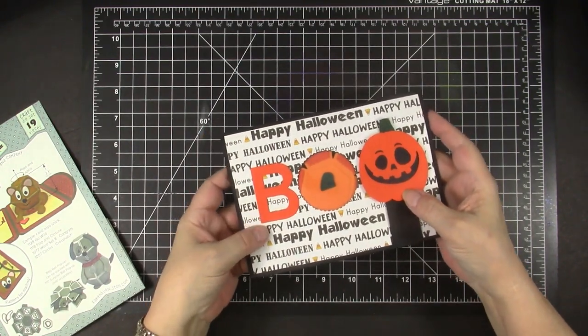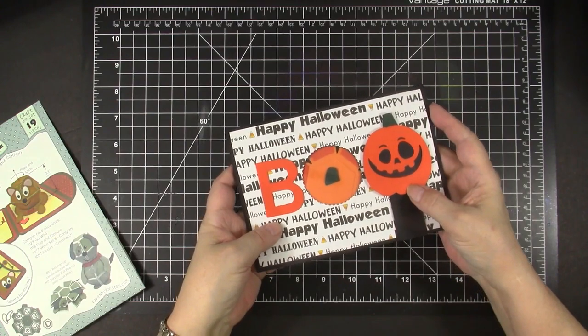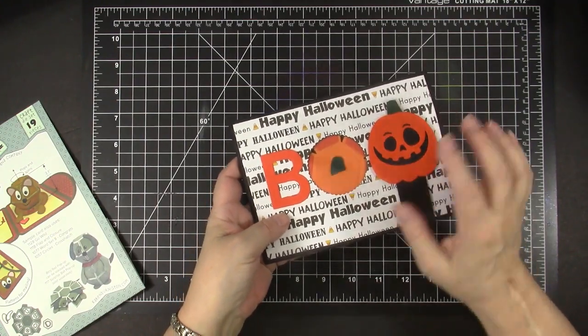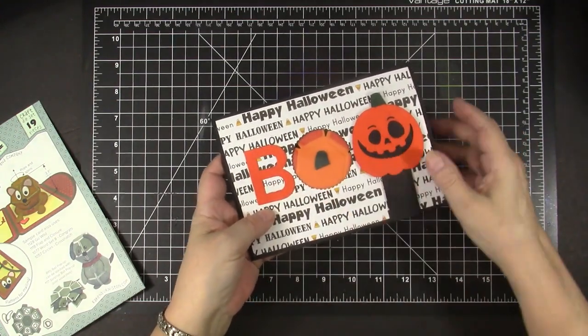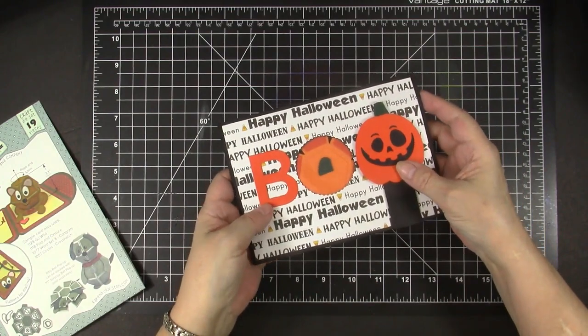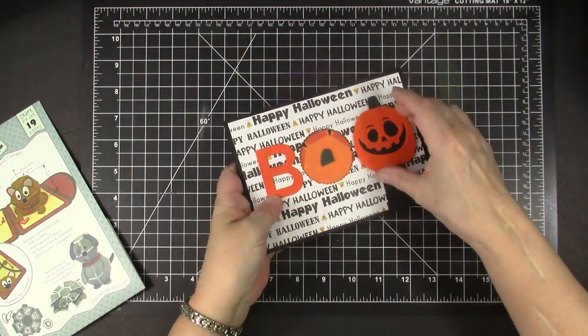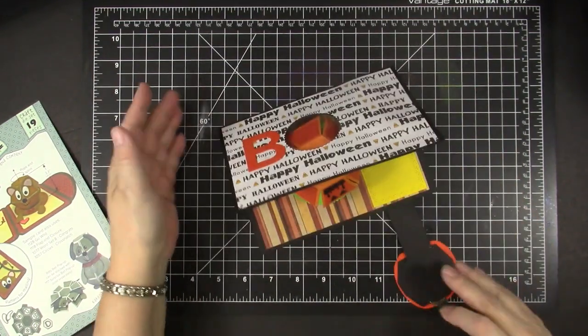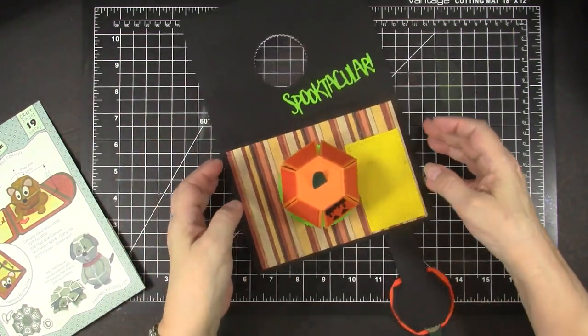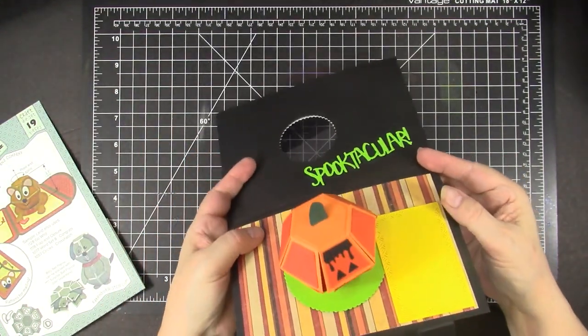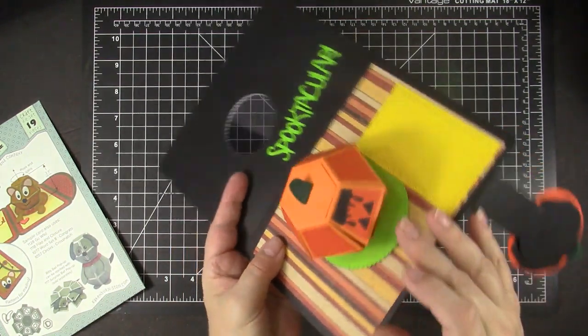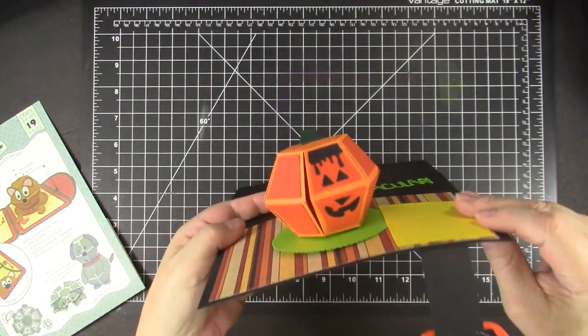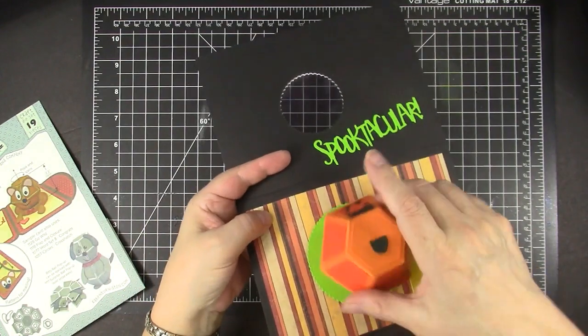This is the card that I am showing how to make in this video. Boo! I have B-O-O with jack-o-lanterns but just look at what happens when the card is opened. A cute little jack-o-lantern pops up and it spins around.